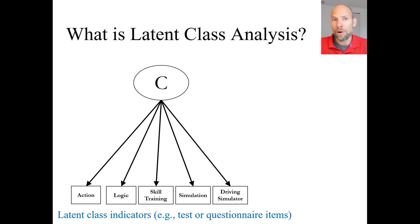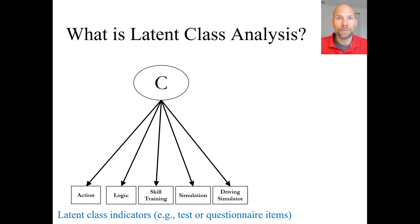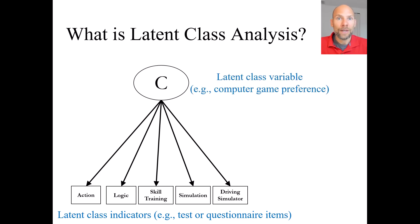Individuals were asked to answer yes or no — yes, I play this game, or no, I don't play this game. The idea is to figure out whether there are specific types of individuals who have a preference for specific types of computer games. So the goal is to extract a latent variable that represents computer game preference.